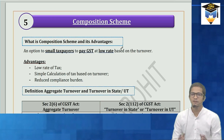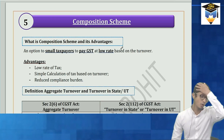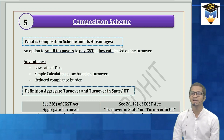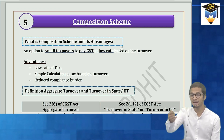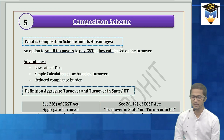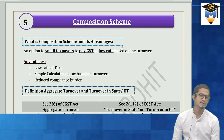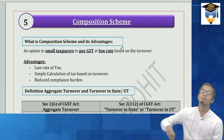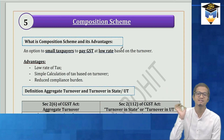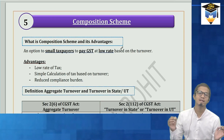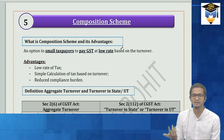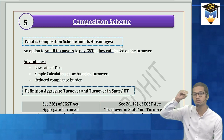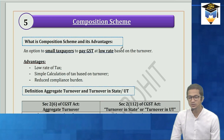If you are a regular supplier, you issue a tax invoice for all taxable supplies. But in case of a composition dealer, because he's not charging any tax from the recipient, he'll issue a bill of supply. He'll deposit the GST himself using his e-cash ledger only — he cannot use the e-credit ledger balance. On the bill he must mention that he is a composition taxable person.